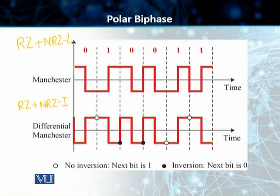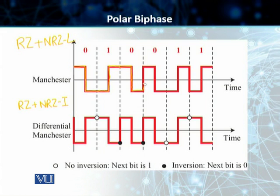Starting from a positive voltage, for a zero we start from positive and make a transition to the negative voltage in the middle of the bit and finish there. The next bit is one: we start from the negative voltage, make a transition to the positive voltage in the middle of the bit and finish at the end. For the next zero, we start, make a transition, and finish. The next bit is zero again, so we make a transition all the way to positive and start there. For the next one, we carry on, and for one again we come back to the negative voltage and continue.